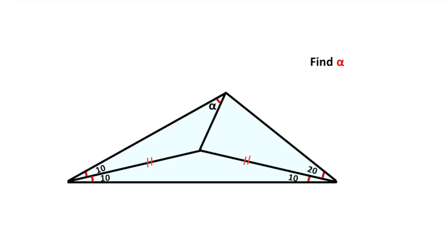In these types of specific questions, we need to look for equilateral or isosceles constructions. Therefore, when we come across angles of 10 and 20 degrees, we should look for an equilateral triangle. To create an equilateral triangle, we need to reach 60 degrees.